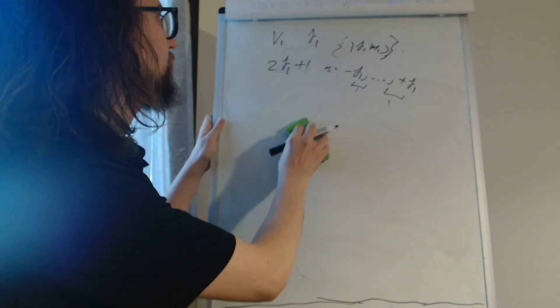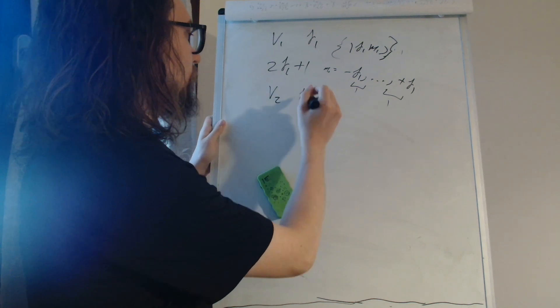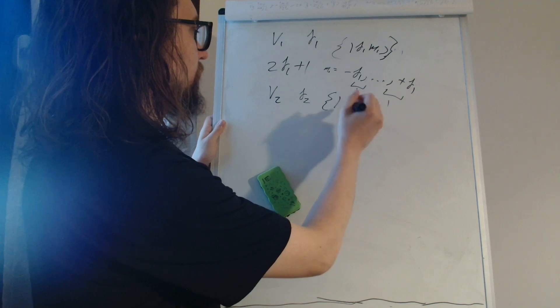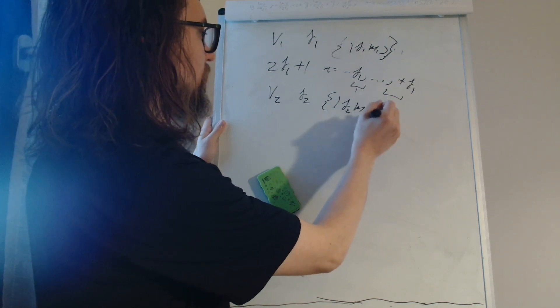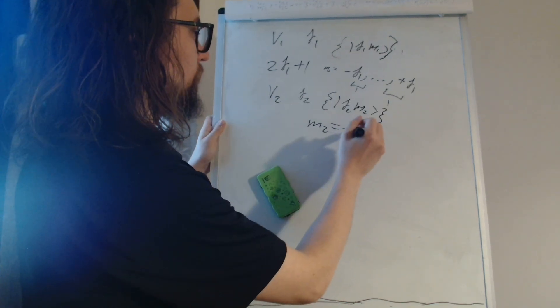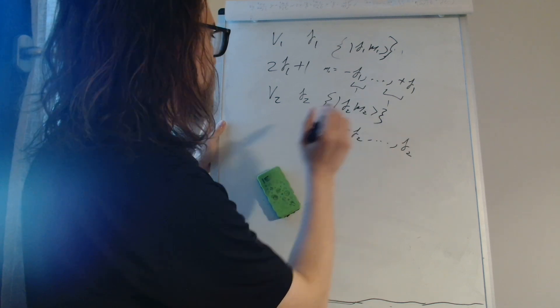Let's now take a second system V2 of momentum J2, with basis states J2, M2. M2 can take the values from minus J2 up to J2.